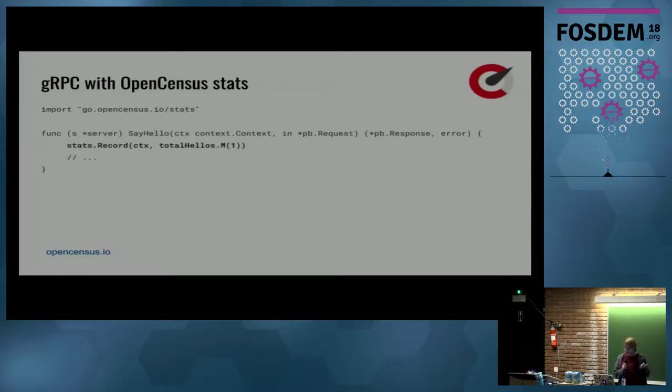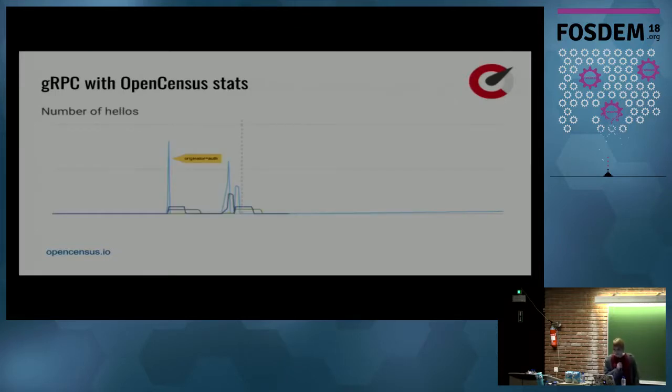So this is how you record values. I have a measure here, total hello, that represents the number of times we said hello. Stats record will say one with the tags in the current incoming context. So you will be able to tell the number of hellos by originator service and by specific user. Then in your dashboard it looks like this. You break down the data by dimensions. The baby blue here is representing the total number of hellos from RPCs originated at the auth service. And the purple one is coming from billing, for example. And two other colors are representing the other originators.